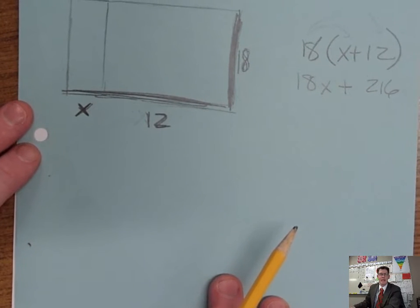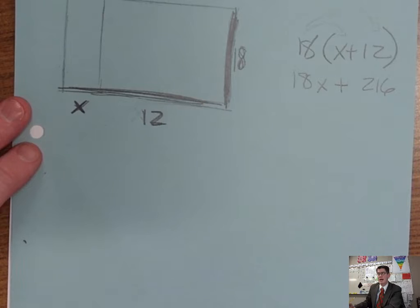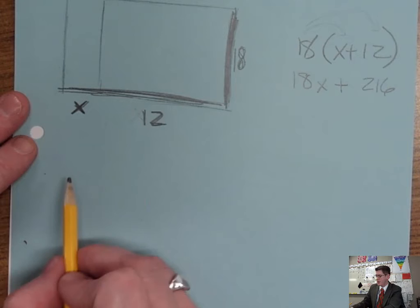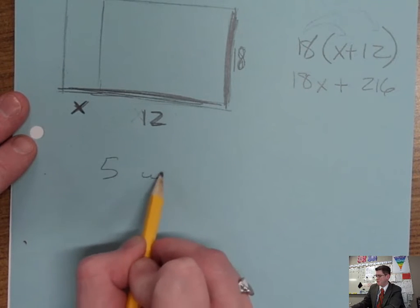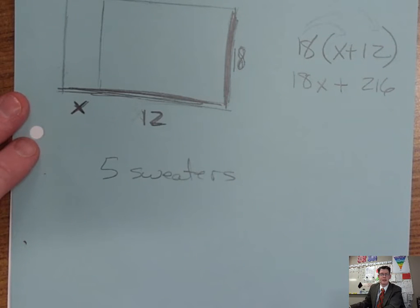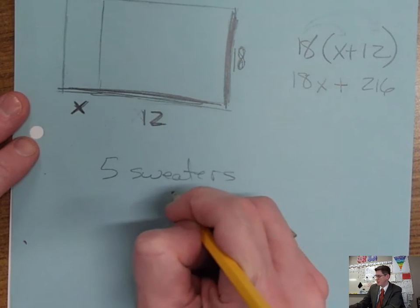Another way you'll see is let's say we're talking about money. And let's say that you're going to get for Christmas maybe five sweaters. And let's say the sweaters cost a certain amount of money. Let's say they cost...